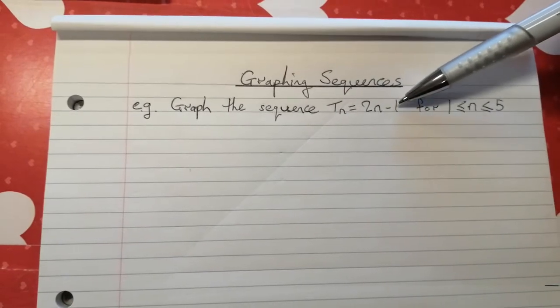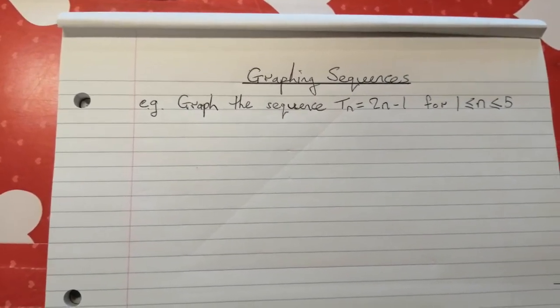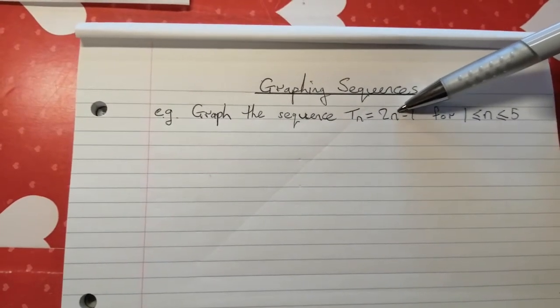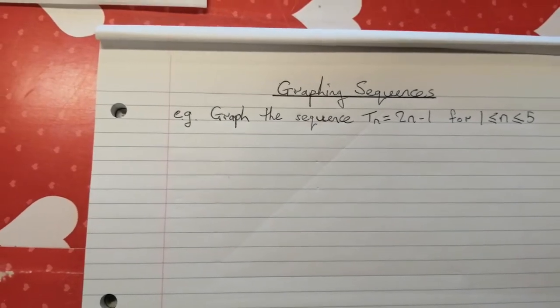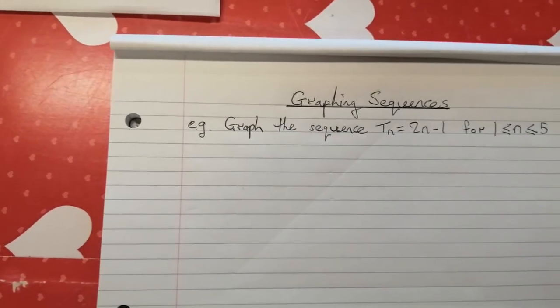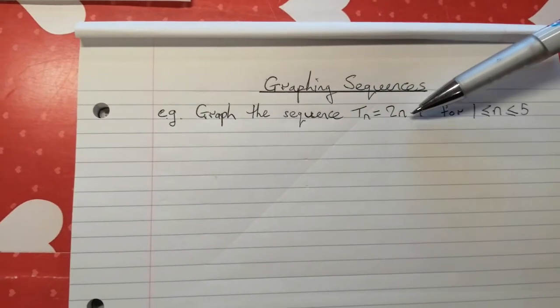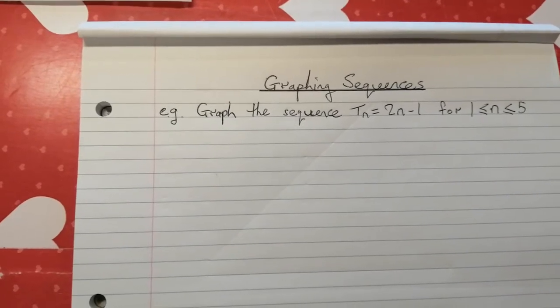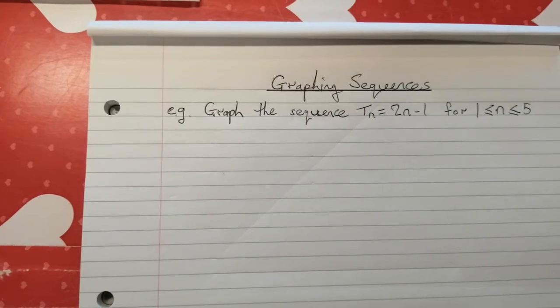And we notice for a start that this sequence just by observation is going to turn out to be a linear sequence, isn't it? Because the power of n, the highest power of n here is n to the power of 1. Now, graphing sequences or number sequences is just like graphing functions that you've done before. So knowing that this is a linear sequence, you can imagine the graph is going to be a line, a straight line.